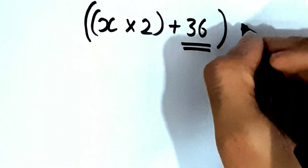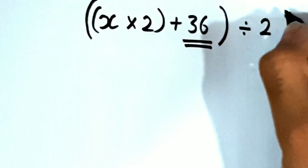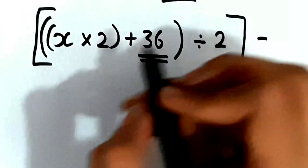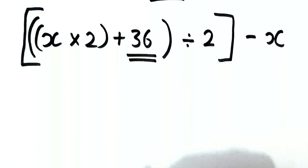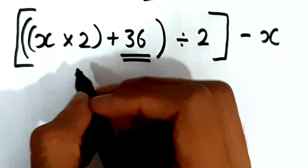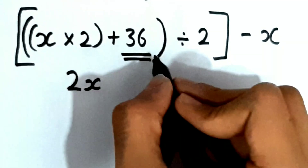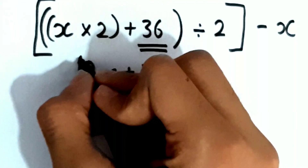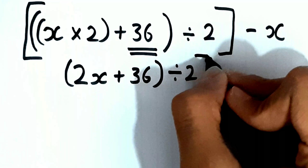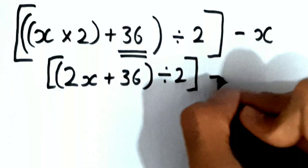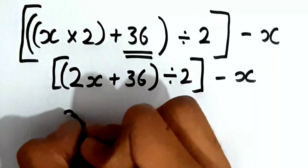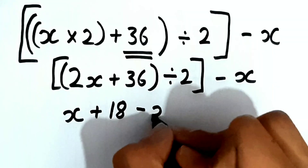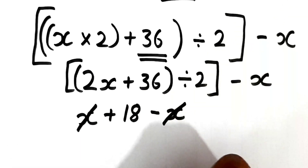Then I told the spectator to divide it by 2. Then I told the spectator to subtract the number he selected at the start — that was x. When we simplify this: 2x plus 36 divided by 2, the whole thing is divided by 2. So we divide 2x and 36 both by 2, then subtract x. Dividing 2x plus 36 by 2 gives x plus 18, which is half of 36. Then minus x cancels with x, so our answer would always be 18.